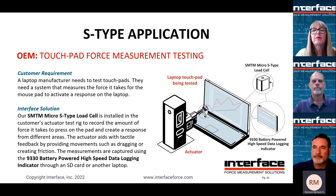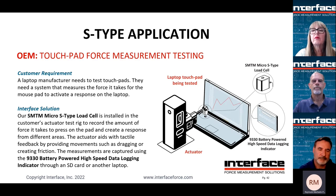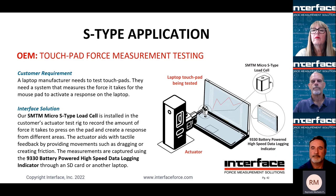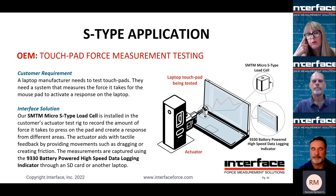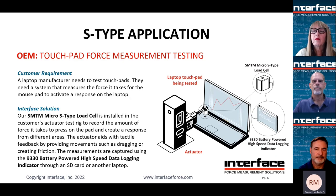In this application, a customer is seeking to characterize the force required to actuate the buttons on their trackpad, because it will vary depending on where on the trackpad you're pushing. Interface supplied the SMTM overload-protected micro S-Type load cell and the 9330 high-speed indicator to meet the customer's requirements. This customer was able to provide tactile feedback to the user when they drag their finger across the trackpad based on information provided from the miniature load cell.